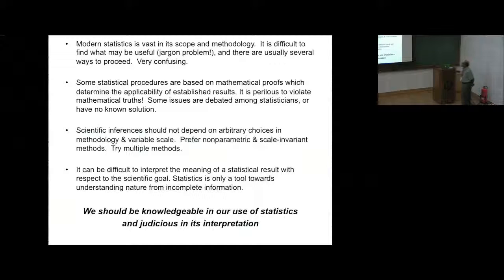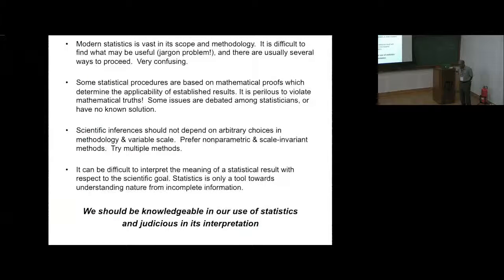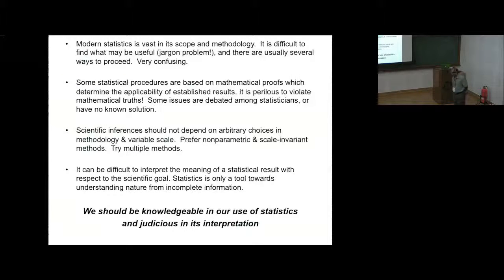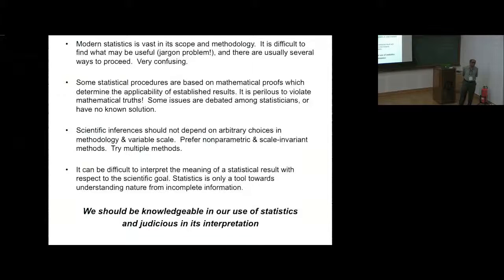Scientific inference should not depend on arbitrary choice of methodology. It can be difficult to interpret the meaning of a statistical result with respect to a scientific goal. If you ask a statistician whether you would like to confirm a certain thing, he would say with 95% confidence that it is true or false, with plus or minus 1% error. So there are so many constraints — that's where input from domain science is very important.